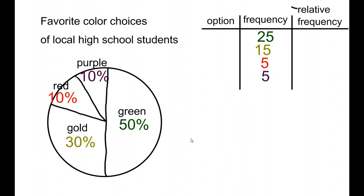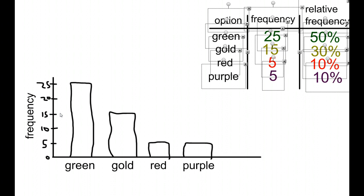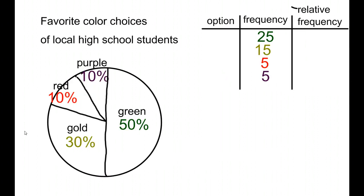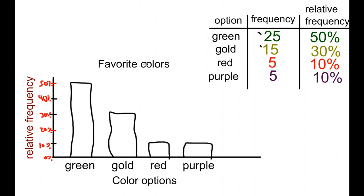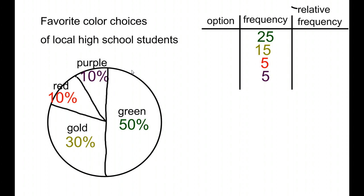Thinking about what we did with the pie graph versus the bar graph — reasons why you might want to use one or the other. On the pie graph, the emphasis is on the percentage; you can see that green takes up a big chunk, whereas the others are smaller. On the bar graph, you get a much better idea of how many of each category there are, whereas with the pie chart the percentage is emphasized. So although it is possible to do relative frequency on a bar graph, if that's your emphasis and what you really want to show, the pie graph is probably going to be your best option.